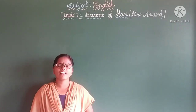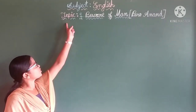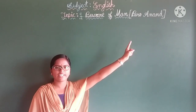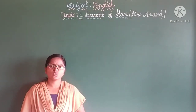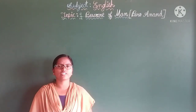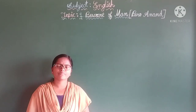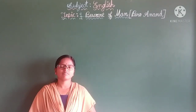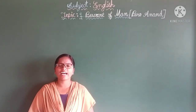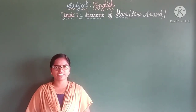The lesson is number one. Look here — topic first: 'Beware of Man.' Who has written this story? Paro Anan. So what is the topic name? Beware of Man. Dear students, this story highlights the bond between the monkey and the baby tiger.